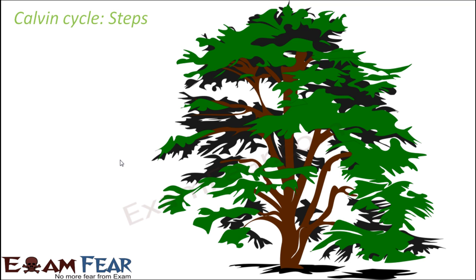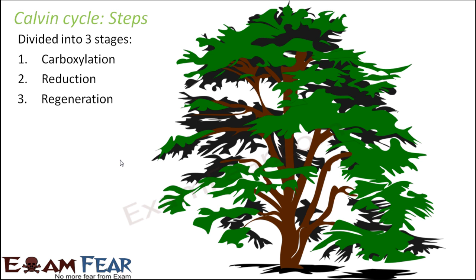So now let us look at the steps of the Calvin cycle. It is a multi-step process with a number of steps involved. It is broadly divided into 3 stages. Three important stages together form the Calvin cycle. The first is carboxylation, second is reduction and the third is regeneration. So these 3 steps together complete the Calvin cycle.